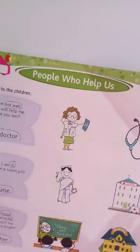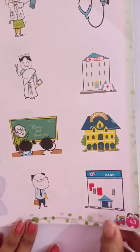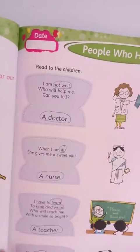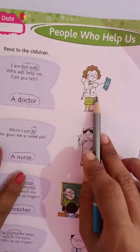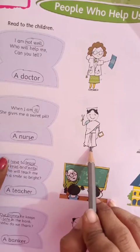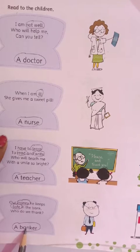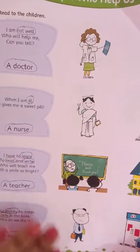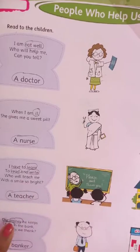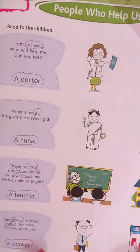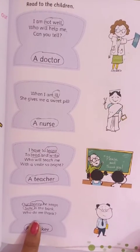Now open page number 43. Students, see the last lecture — in page number 43 we talked about our helpers. Right? So here, first picture is doctor, second picture is nurse, third picture is teacher, and fourth picture is banker. I hope you all remember: the doctor is who makes your health right, the nurse helps the doctor, the teacher is who teaches you, and the banker is where you can deposit your money. Theek hai?